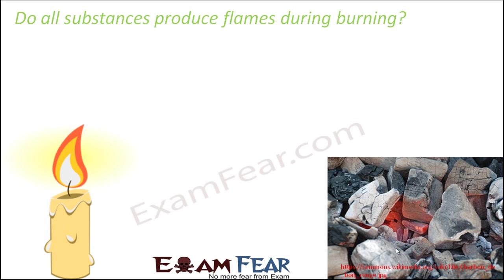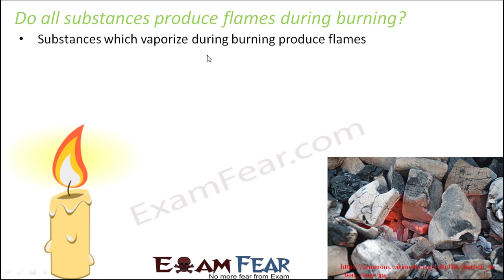So the question is: which substances produce flames? Substances which vaporize during burning produce flames. Those substances which get converted into their vapors during burning are the only ones that produce flames. Going back to the candle example: it is the wax that gets vaporized. When the candle burns, the wax melts and those melted wax molecules get converted into vapors, and due to the formation of those vapors we see the flame — because flame is nothing but ignited vapors. In case of charcoal, no vaporization happens, so no vapors means no flames.